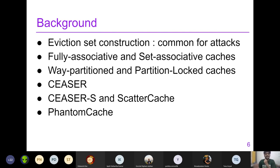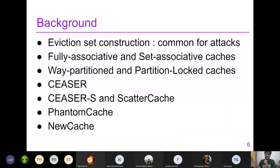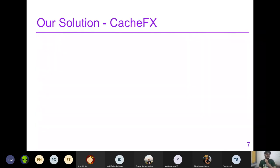Phantom Cache maps each address to multiple sets using multiple hash functions; a cache hit requires searching multiple sets, and on a miss, the cache line is placed in a randomly selected set. New Cache is a more efficient implementation of a fully associative cache — instead of comparing the full tag across all cache lines, it first compares a smaller index bit; only if the index bit hits does it compare the full tag. A smaller index bit significantly reduces power and implementation cost, while a larger index bit approaches full associativity.